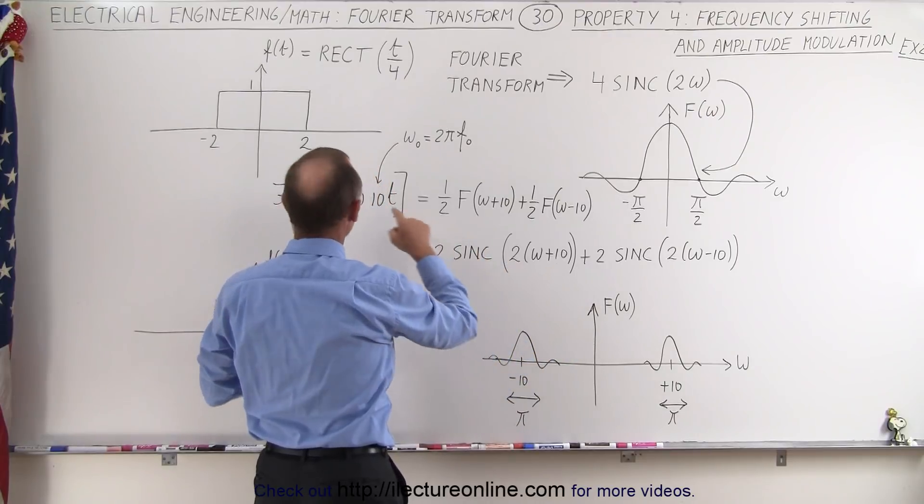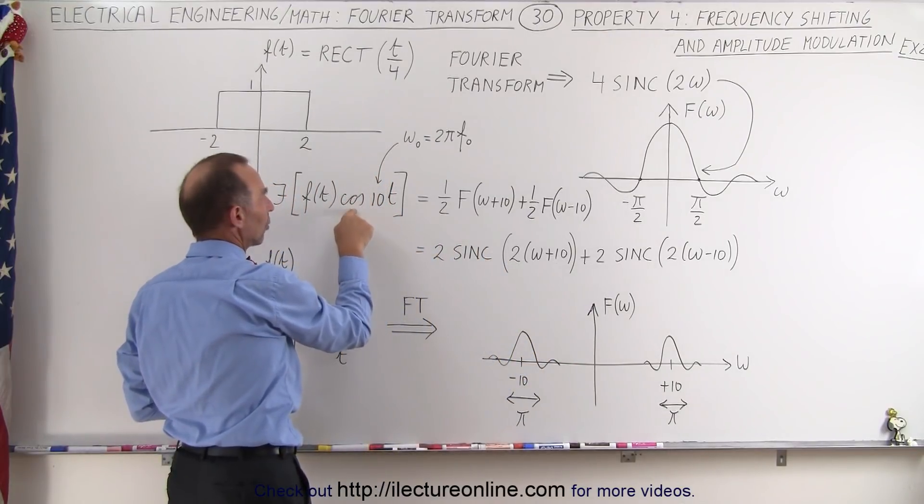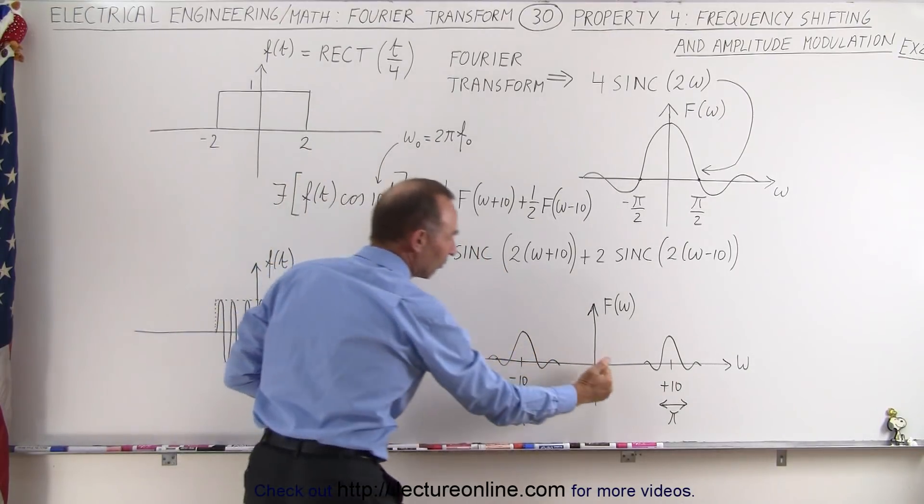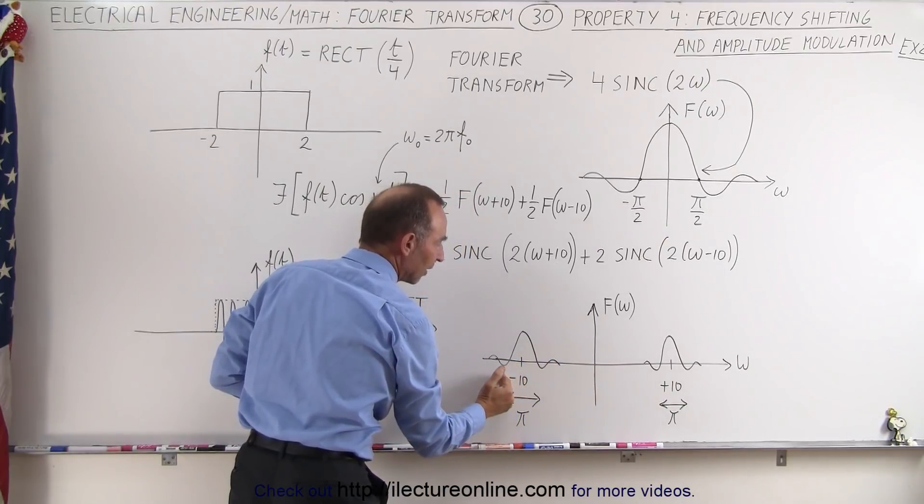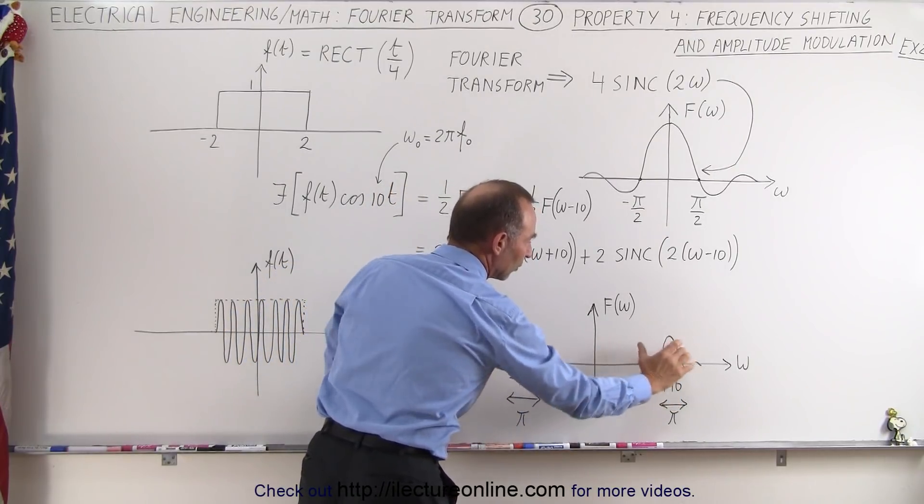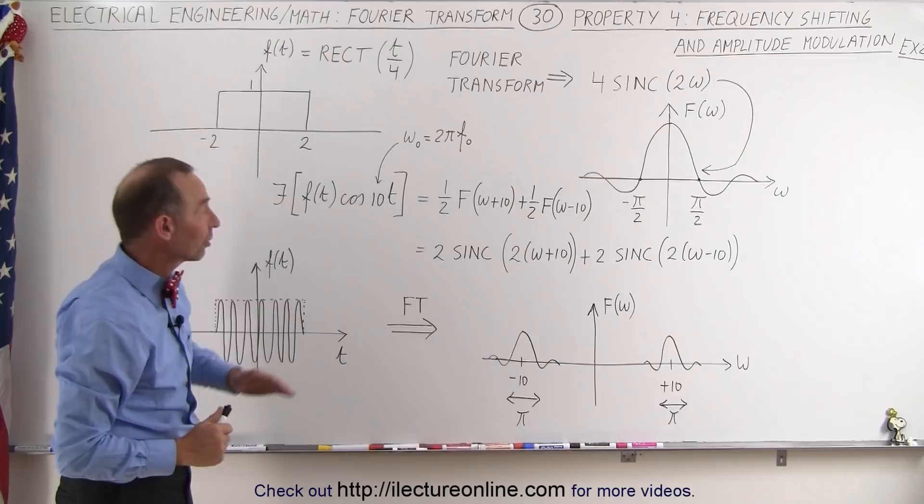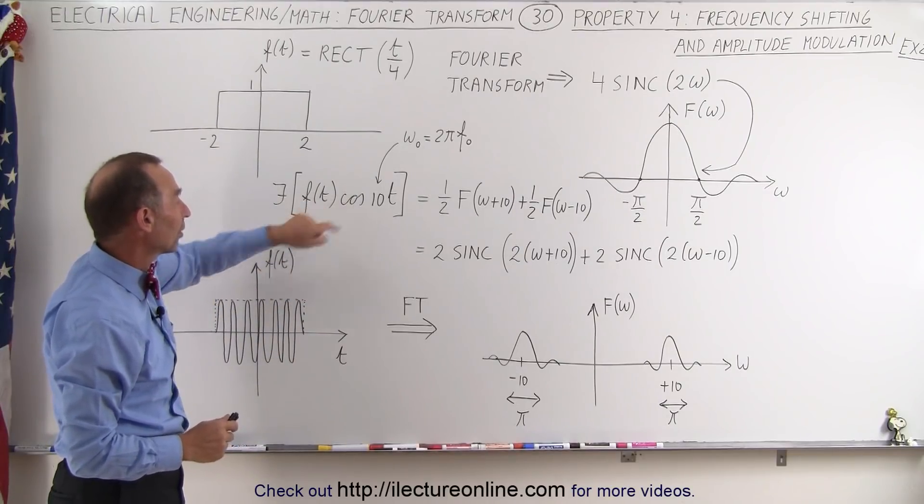And notice that in this case, because we have this multiplication times a cosine of 10t, the frequency will be shifted to the left 10 and to the right 10. So now we have a nice frequency shift caused by the multiplication of the cosine of 10t.